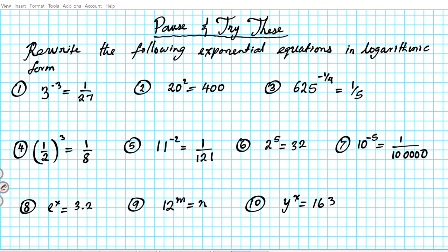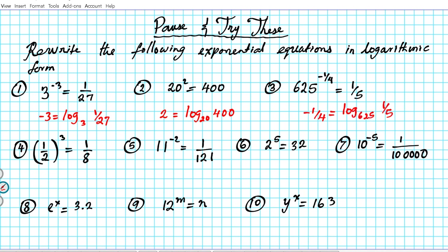Welcome back — hopefully you had a chance to try the practice problems. The solutions: Number 1: negative 3 = log base 3 of (1/27). Number 2: 2 = log base 20 of 400. Number 3: negative 1/4 = log base 625 of (1/5). Number 4: 3 = log base (1/2) of (1/8).